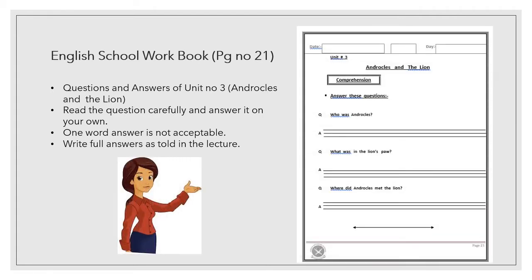Let us start English school workbook page number 21. On page number 21, you can see that it's written unit number 3, Androcles and the Lion. Do you remember the story of Androcles and the Lion? Yes, this is the same story that we have done already. Now you have to do the question answers of this unit.